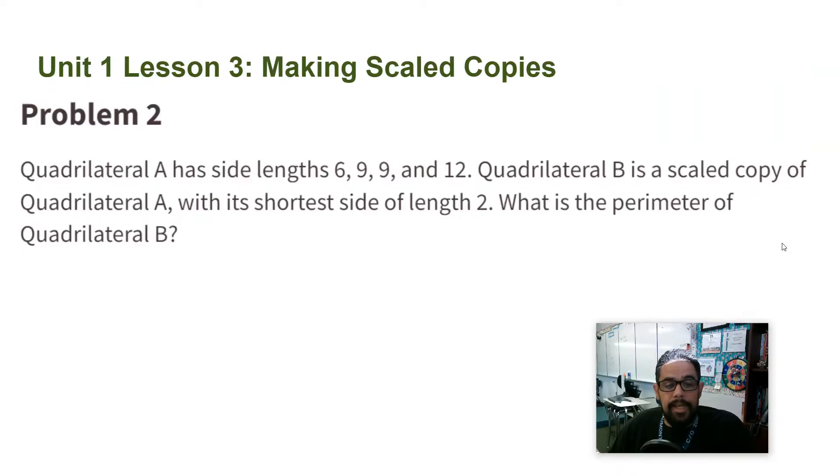Quadrilateral A has side lengths 6, 9, 9, and 12. Quadrilateral B is a scaled copy of quadrilateral A with its shortest side of length 2. What is the perimeter of quadrilateral B?